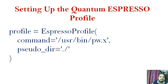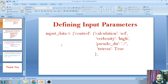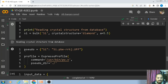Next we have to set up the Quantum ESPRESSO profile. This profile is used when running the calculation in Google Colab. If you have ASE and Quantum ESPRESSO installed on your own computer, you do not need to set up the profile. In the profile, I write the command equal to the path of my pw.x file, which is '/usr/bin/pw.x', and the path for the pseudopotential directory, which is the current folder denoted by './'.